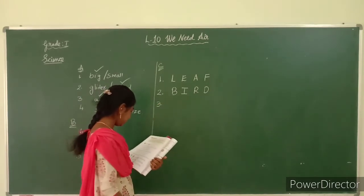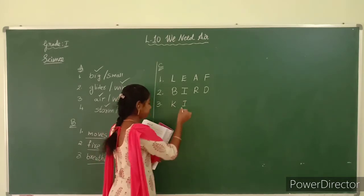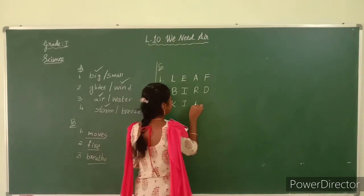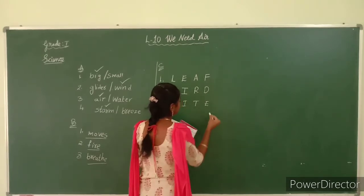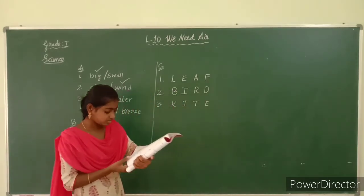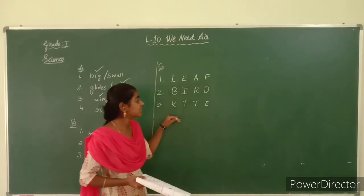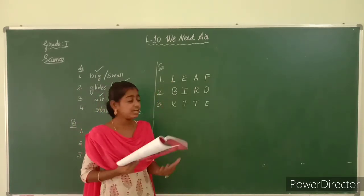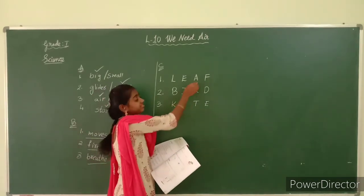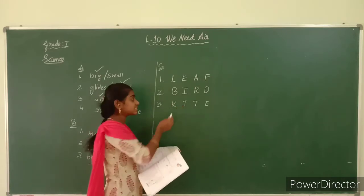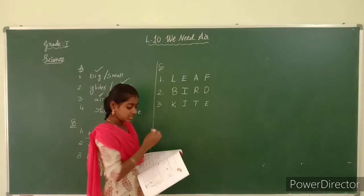Third one: K — I for ice cream — T for tiger — E for eagle. K-I-T-E. Kite. Kite can fly when air comes. These objects — leaf, bird, and kite — can fly when air comes.